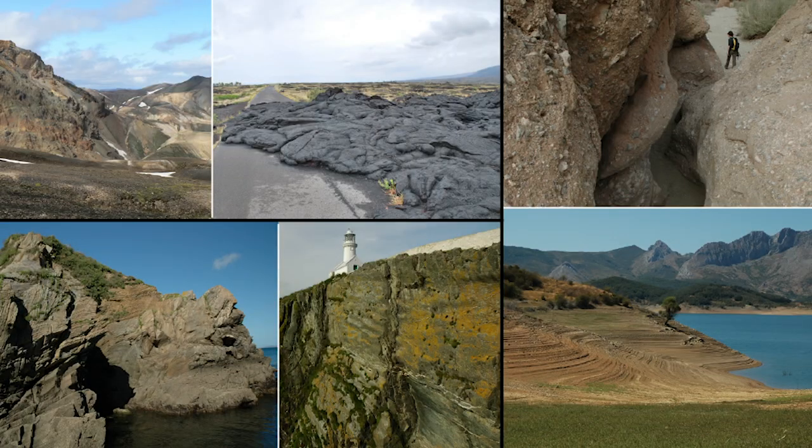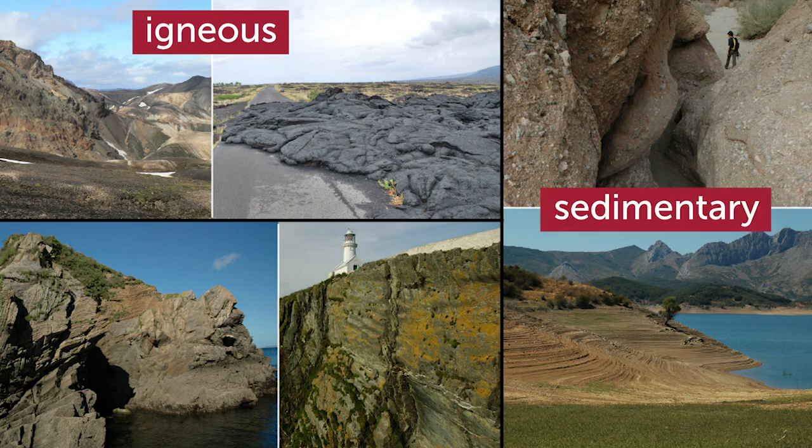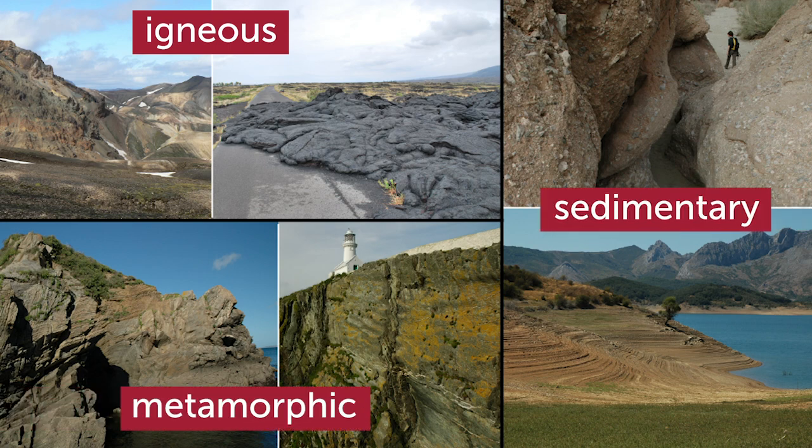We live on top of Earth's crust, a thin shell representing less than 1% of the total volume of our planet. Yet its shape and relief can tell us a lot about the rest of our planet. The crust is composed of igneous, sedimentary and metamorphic rocks that lie on top of a denser mantle composed of peridotite.